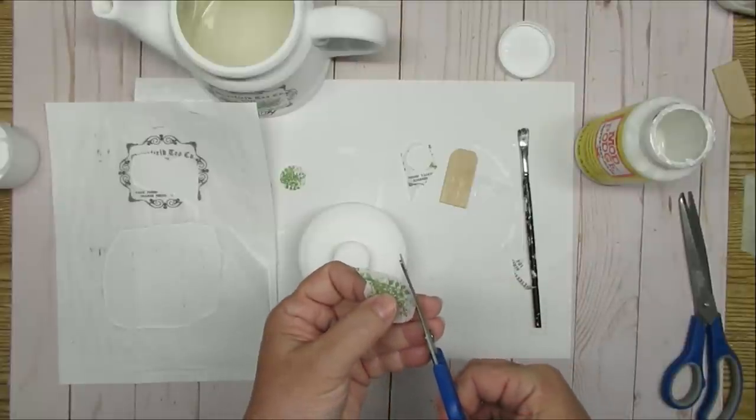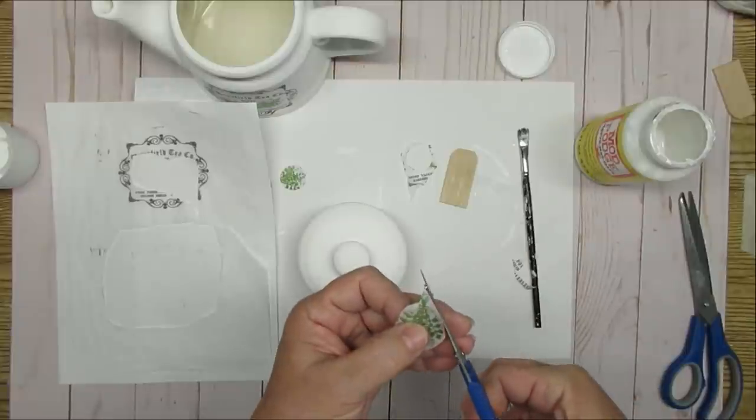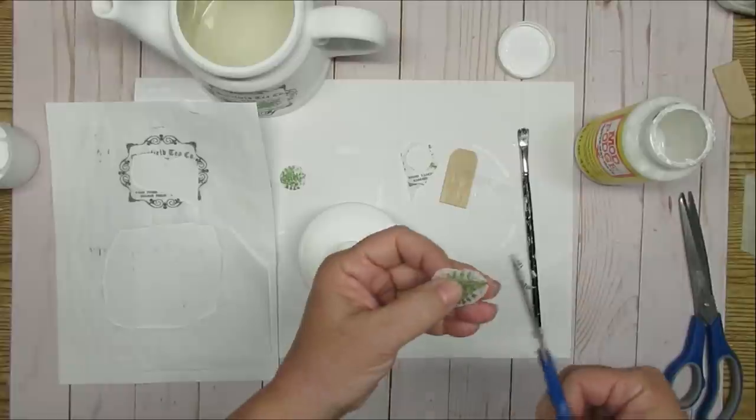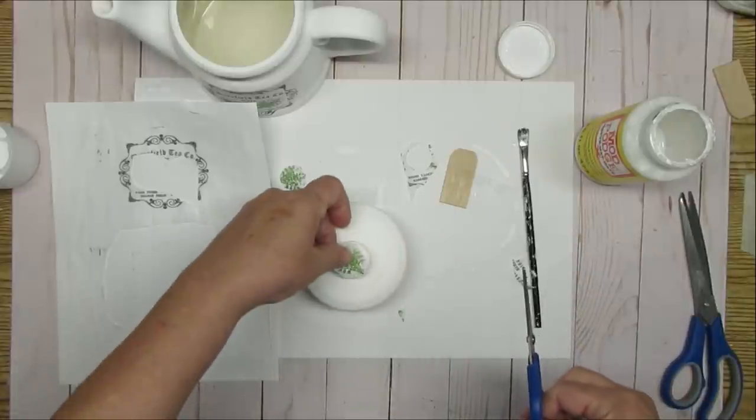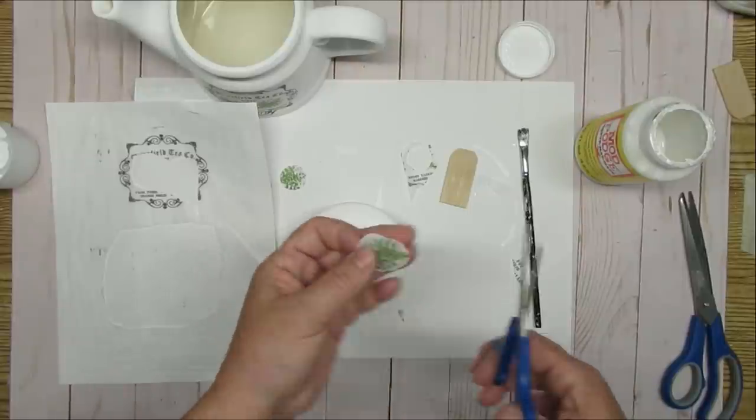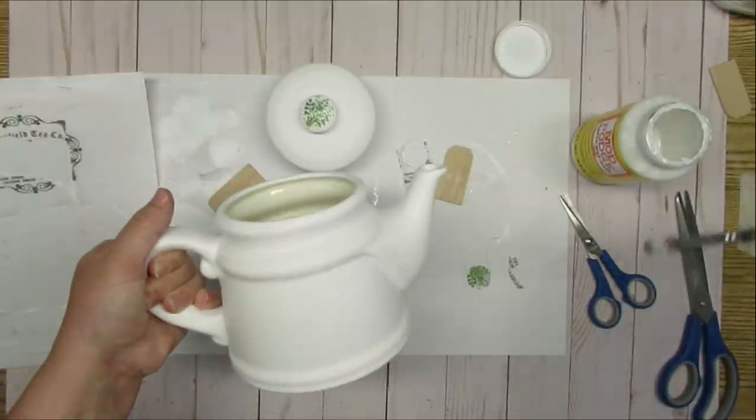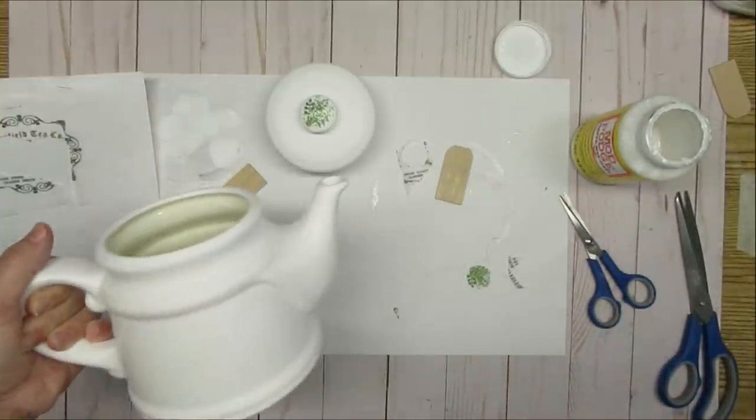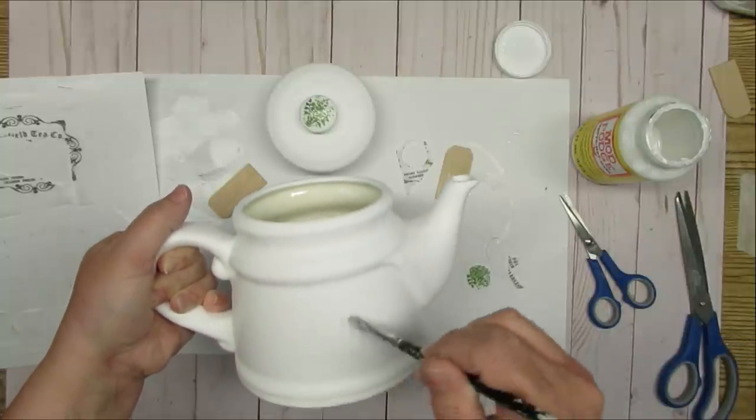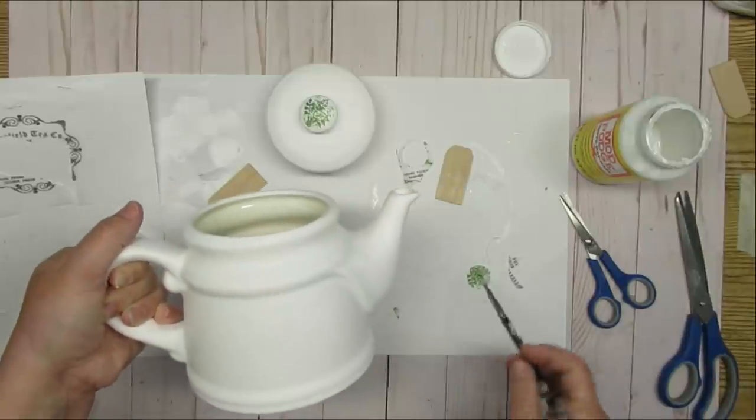I decided to cut out one of the greenery pieces from the other label and cut it into a nice round circle so it could fit right on top of the knob of the teapot lid. I thought this would be such a cute little addition so I'm going to do the same thing with the Mod Podge. I also cut out another piece of greenery and put it on the back of the teapot where there was an original little flower design. It had a little bit of a raised edge to it so this would camouflage it really nicely.